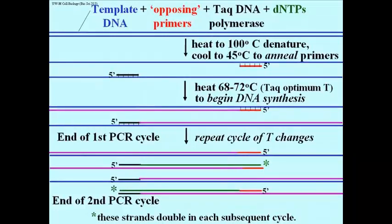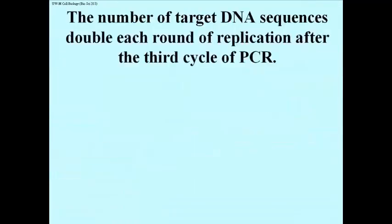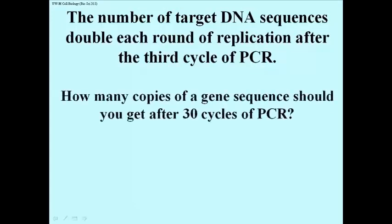The number of target DNA sequences doubles each round of replication after the third cycle. Starting after the third cycle, the target you're after begins accumulating in large numbers. You can calculate how many copies of a gene sequence you'd get after 30 rounds of PCR. Realistically, you start counting after round 3, so round 4 through 30 is 26 cycles. I don't have the answer, but the number is quite huge.